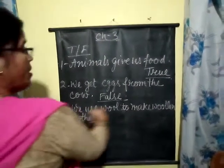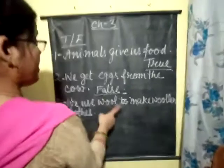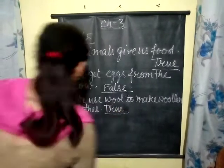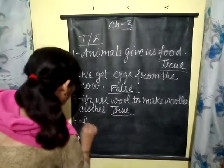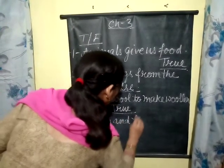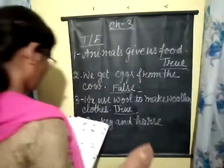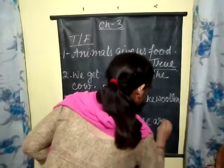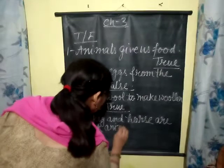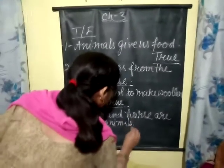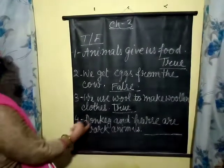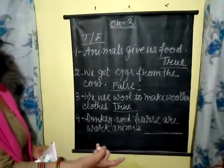We use wool to make warm clothes — and this is true. Next, donkey and horse are work animals. Work animals are the ones that carry load and they help us. So donkey and horse are both animals that carry load — and this is true.